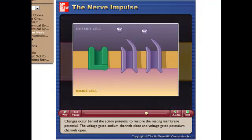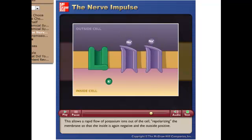Changes occur behind the action potential to restore the resting membrane potential. The voltage-gated sodium channels close and voltage-gated potassium channels open. This allows a rapid flow of potassium ions out of the cell, repolarizing the membrane so that the inside is again negative and the outside positive.